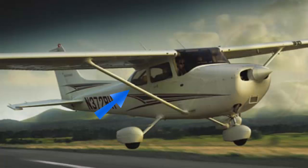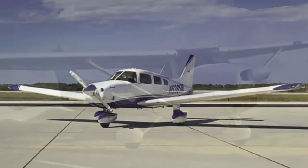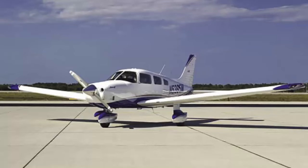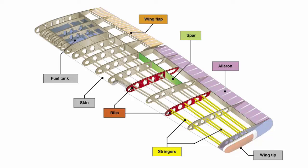Many high-wing airplanes have external braces, or wing struts, which help to spread the loading to the fuselage for additional support. Since wing struts are usually attached approximately halfway out on the wing, this type of wing structure is called semi-cantilever. A few high-wing and most low-wing airplanes have what's called a full-cantilever wing, designed to carry the loads without external struts.